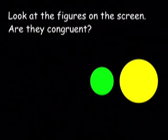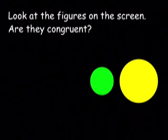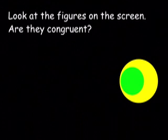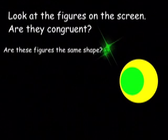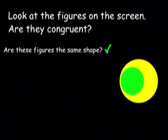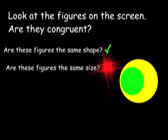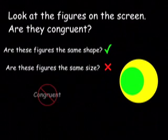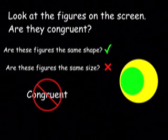Look at the two circles on the screen. Let's decide if these circles are congruent. Even though they are the same shape, they are not the same size, so they are not congruent.